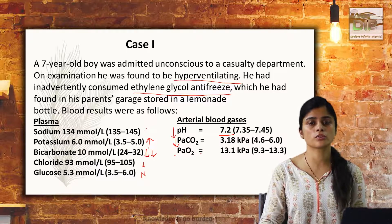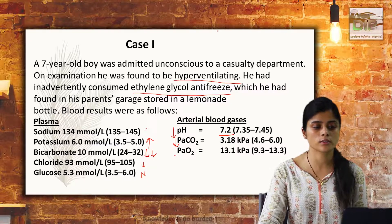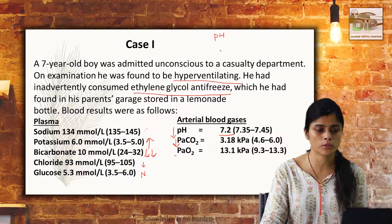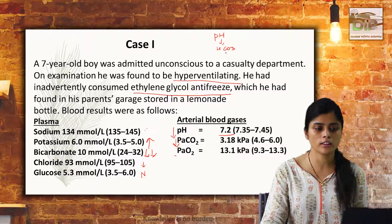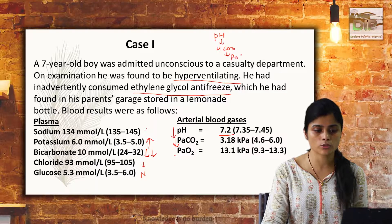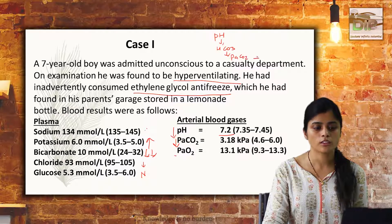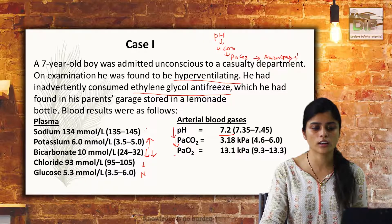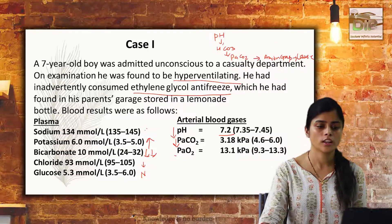In approaching a patient with acid-base disturbances, as I have already discussed, the first thing you look for is the pH of the patient. The second thing is the bicarbonate level. The third thing is the PaCO2 level. The fourth thing is the anion gap. And the fifth thing is the underlying cause for the acid-base disorder.